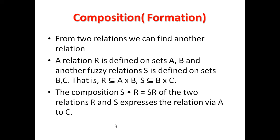So this is how we generate relations for fuzzy sets. Now, composition is basically forming a new relation from two existing relations. Say we have R and S as two different relations — we can find R composition S, which gives us a different relationship combining the two matrices.